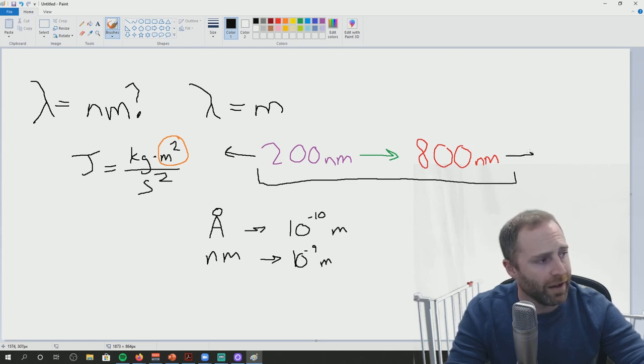And more than that, over on this side, you'd be like IR, so infrared. And this would be UV.